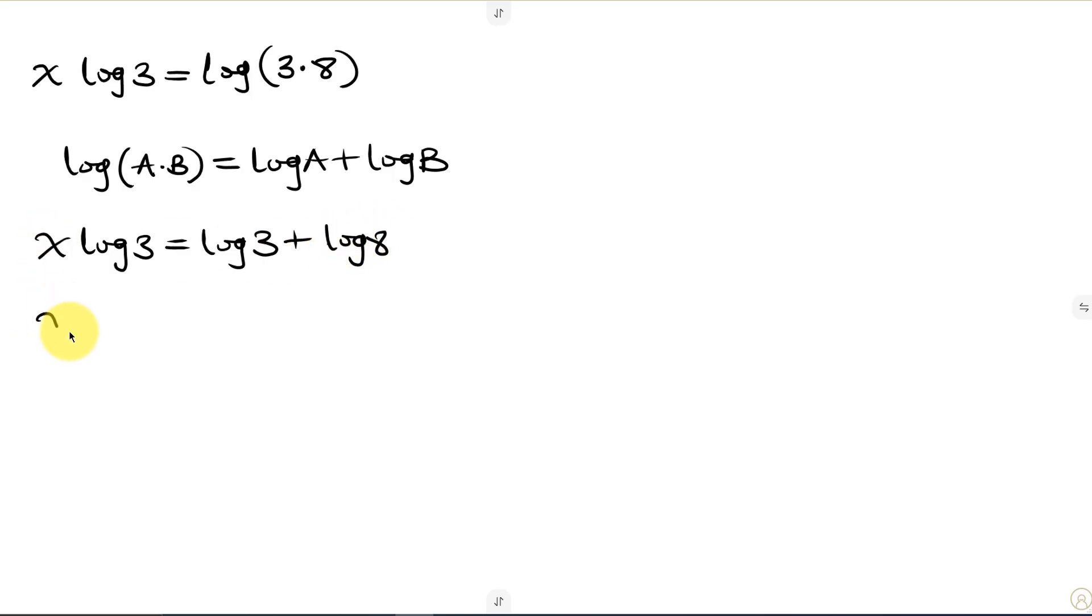And then simplifying further, we have x log 3 to be equal to log 3 plus log. Now we're going to be breaking down 8. 8 can be written as 2 to the power of 3. So we can simplify further. So we have x log 3 to be equal to log 3 plus. Now also applying the power law of logarithm here. So this will be 3 times log 2.